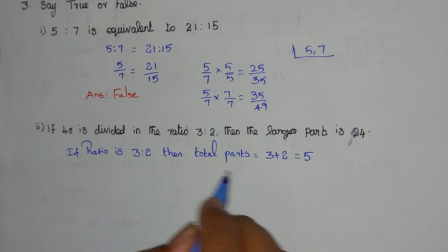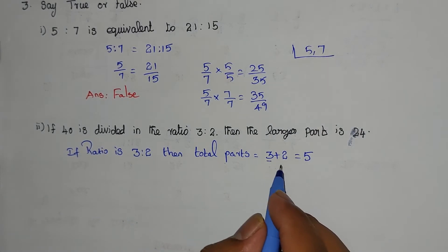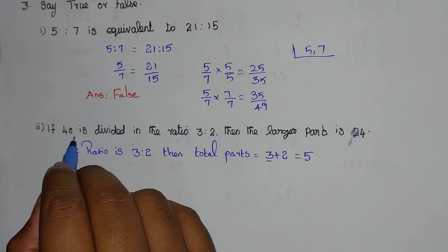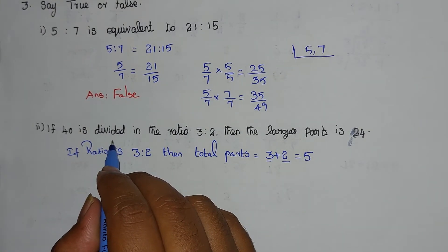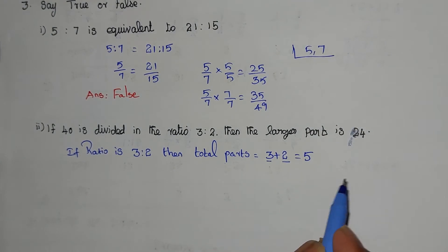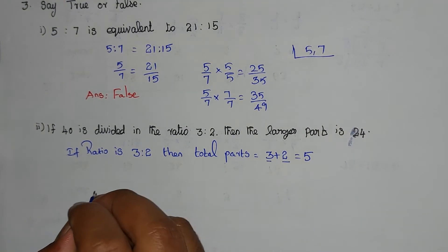What do we need to do? We need to find 3 parts out of 40 and 2 parts out of 40. The larger part should be 24. We can find it easily.